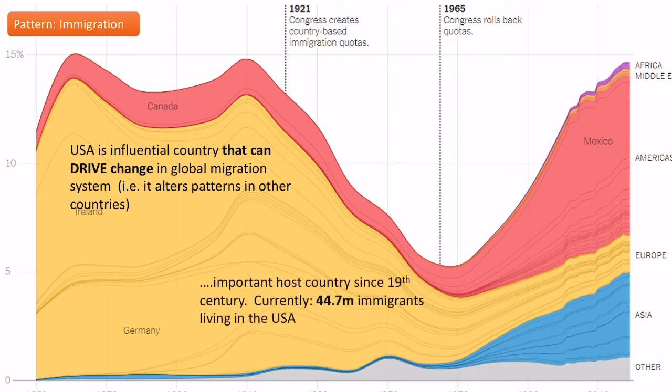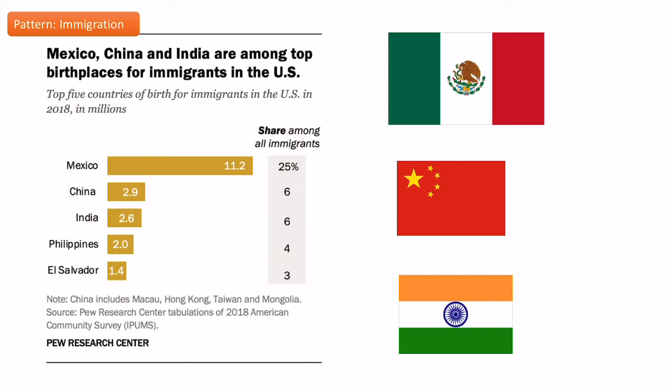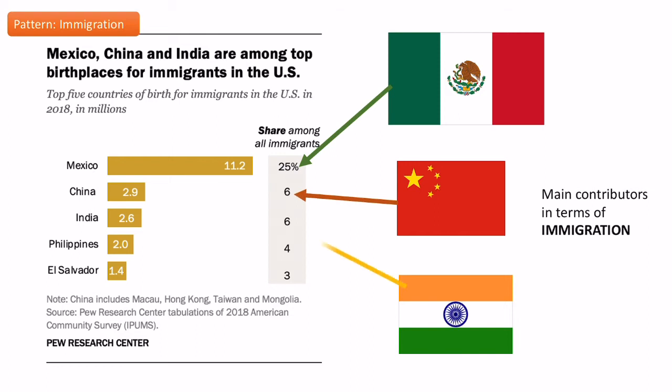It's a very important host country — it currently has 44.7 million immigrants living in the USA, though that will change over time. In terms of other important immigration patterns, the main contributors are Mexicans, Chinese and Indians.